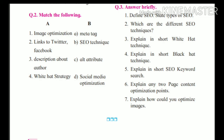Question number 6: explain any two page content optimization points. Title tag and meta description tag are the two page content optimization points. Title is the first thing that users notice in search results while using Google. For meta description tag: while creating a webpage, the meta description should be used to boost your on-page SEO, and it should be between 70 and 160 characters with spaces.